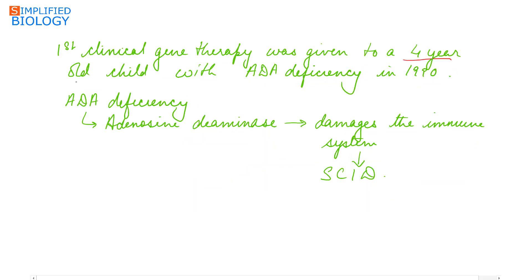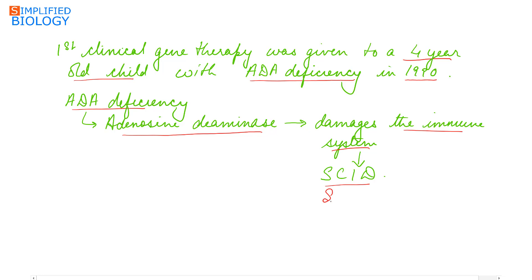The first clinical gene therapy was given to a four-year-old girl with ADA deficiency in 1990. ADA deficiency means the adenosine deaminase enzyme is not formed in these patients, which damages the immune system, leading to SCID disease — Severe Combined Immunodeficiency.